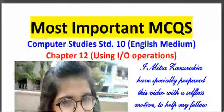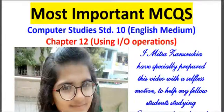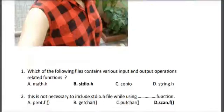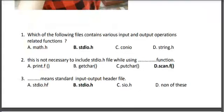Chapter number 12: Using IO Operations — Most Important MCQs. First, which of the following files contains various input and output operations related functions? The correct answer is B, stdio.h.